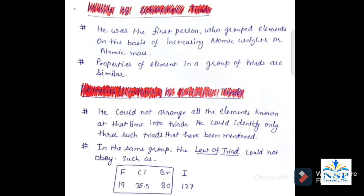The merits of Dobereiner's Triads are: Dobereiner was the first person who grouped elements on the basis of increasing atomic weights or atomic masses, and all properties of elements in a group of triads are similar.